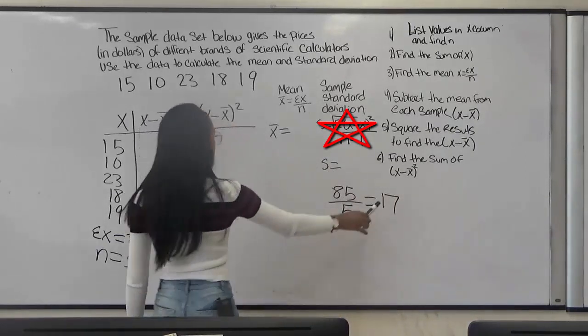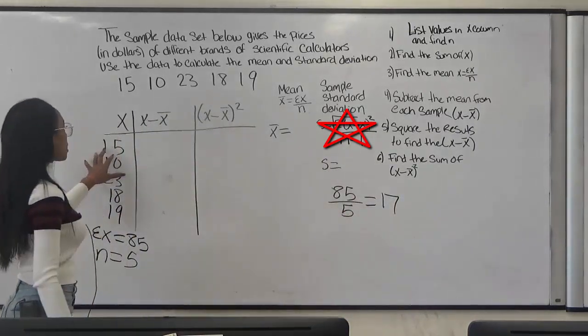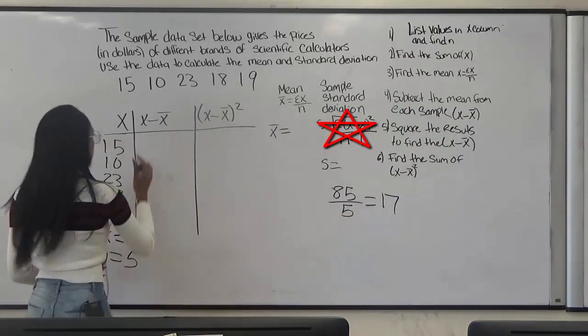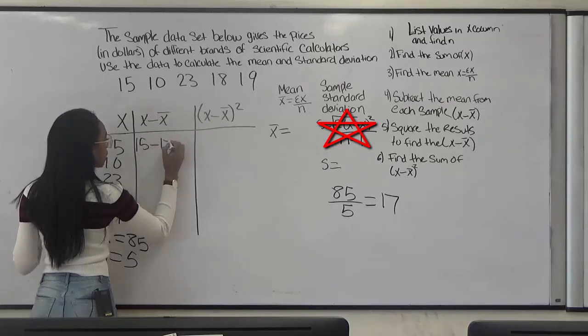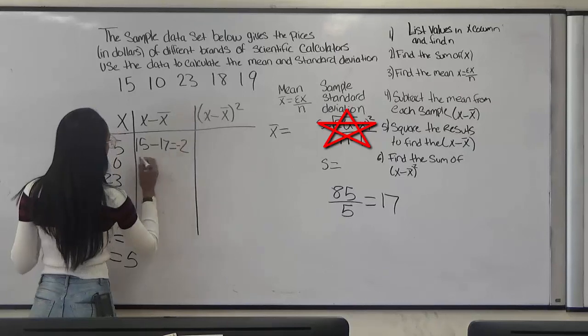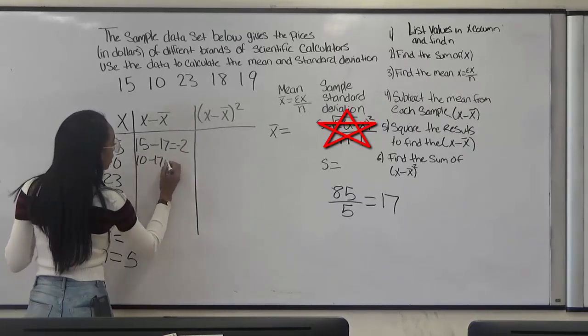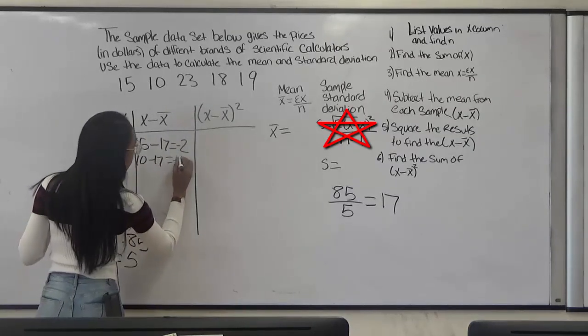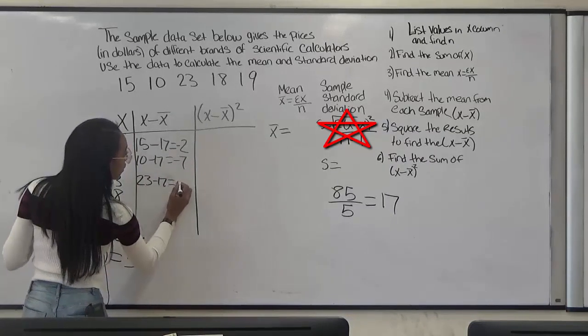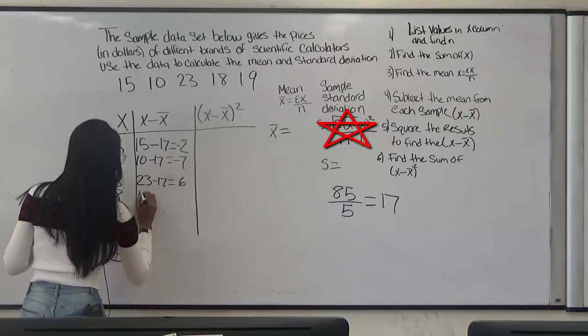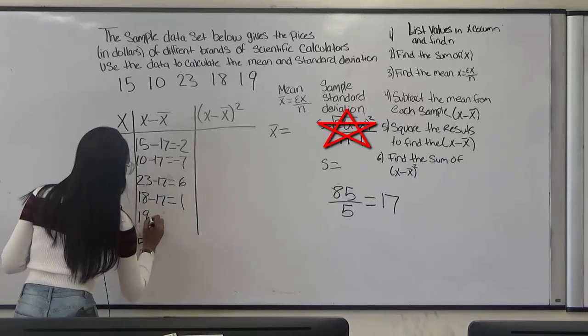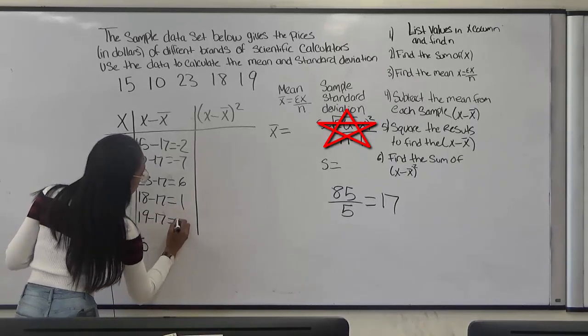So our average number is 17. Now you want to take your x and subtract it by our average number. So 15 minus 17 equals negative 2. 10 minus 17 equals negative 7. 23 minus 17 gives us 6. 18 minus 17 gives us 1. And 19 minus 17 gives us 2.